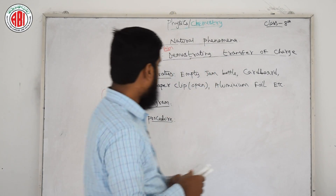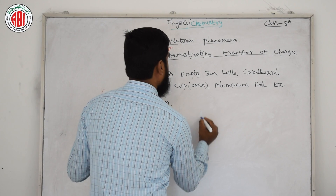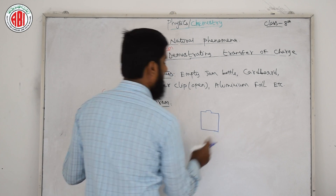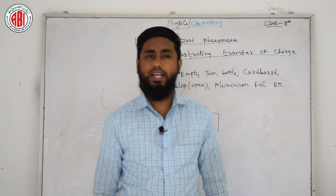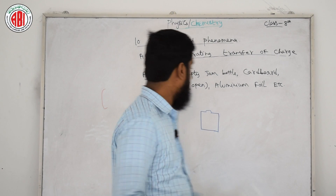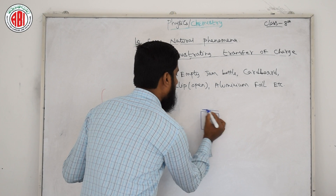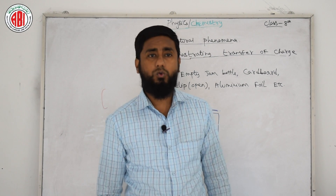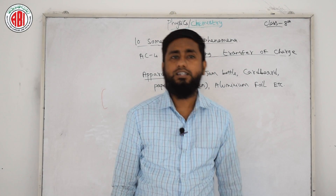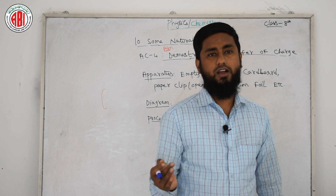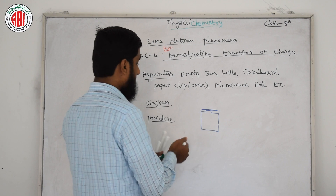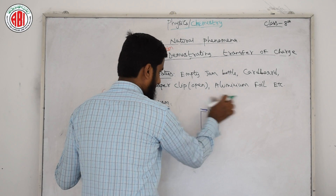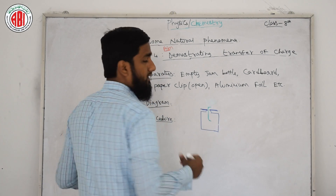Take an empty jam bottle — मैं एक छोटा सा rough diagram draw कर देता हूँ। हमने एक empty jam bottle ले ली। उसके बाद — take a piece of cardboard slightly bigger in size than the mouth of the bottle। जो bottle का mouth है उससे थोड़ा सा bigger size का cardboard लो। उसमें peer a hole so that a metal paper clip could be inserted। Open out the clip as shown in figure 5, and insert the paper clip through the hole।